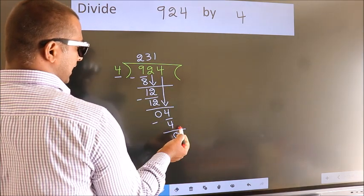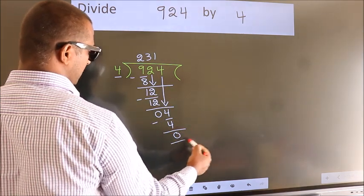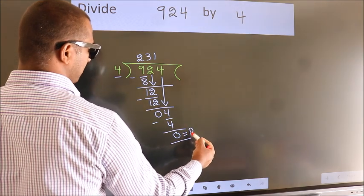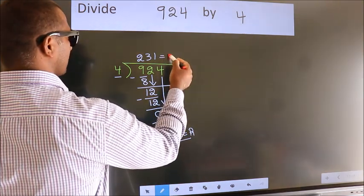No more numbers to bring it down. So, we stop here. This is our remainder. This is our quotient.